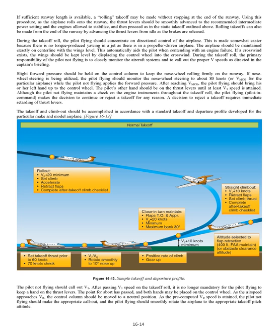The takeoff and climbout should be accomplished in accordance with a standard takeoff and departure profile for the particular airplane. After passing V1 speed, it is no longer mandatory for the pilot flying to keep a hand on the thrust levers — the abort point has passed and both hands may be placed on the control wheel. As the airspeed approaches VR, the control column should be moved to a neutral position. As the pre-computed VR speed is attained, the pilot not flying makes the appropriate call-out, and the pilot flying smoothly rotates the airplane to the appropriate takeoff pitch attitude.